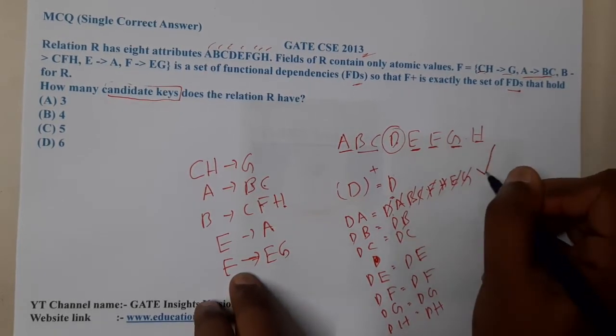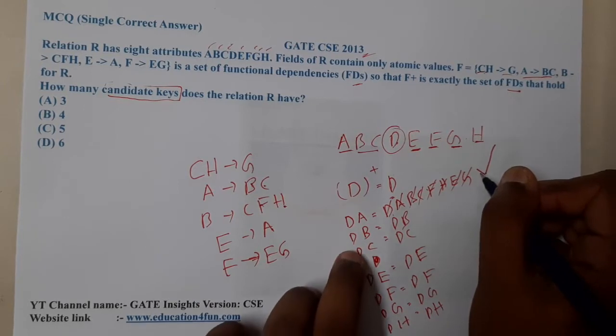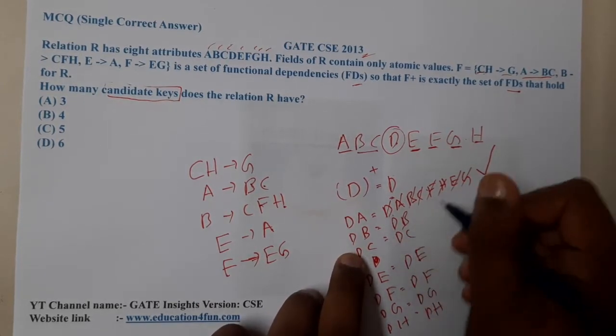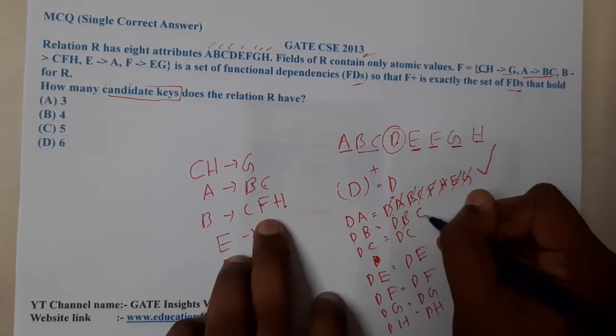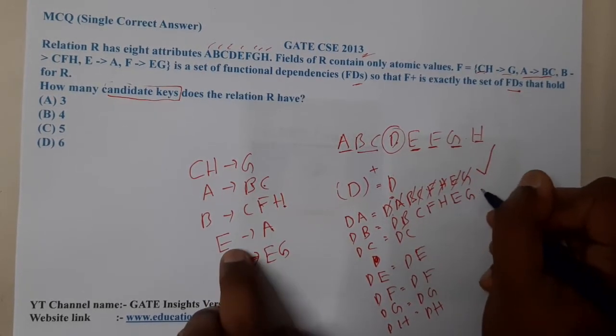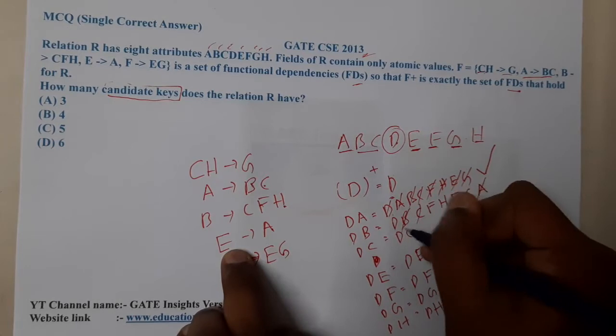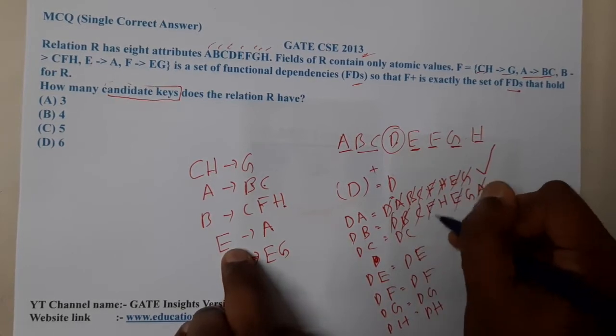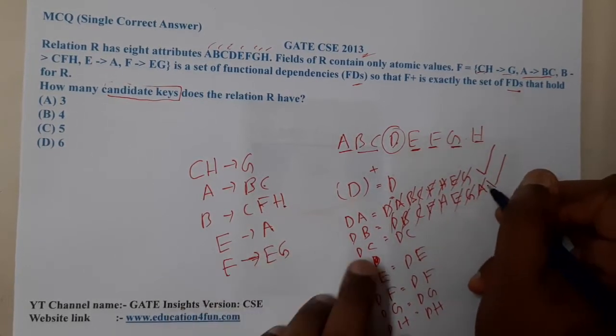Moving on to DB. From B, I can go to CFH. From F, I can go to E and G. From E, I can go to A. So A, B, C, D, E, F, G, and H. This is also done. Moving on to DC - from DC we cannot go anywhere.